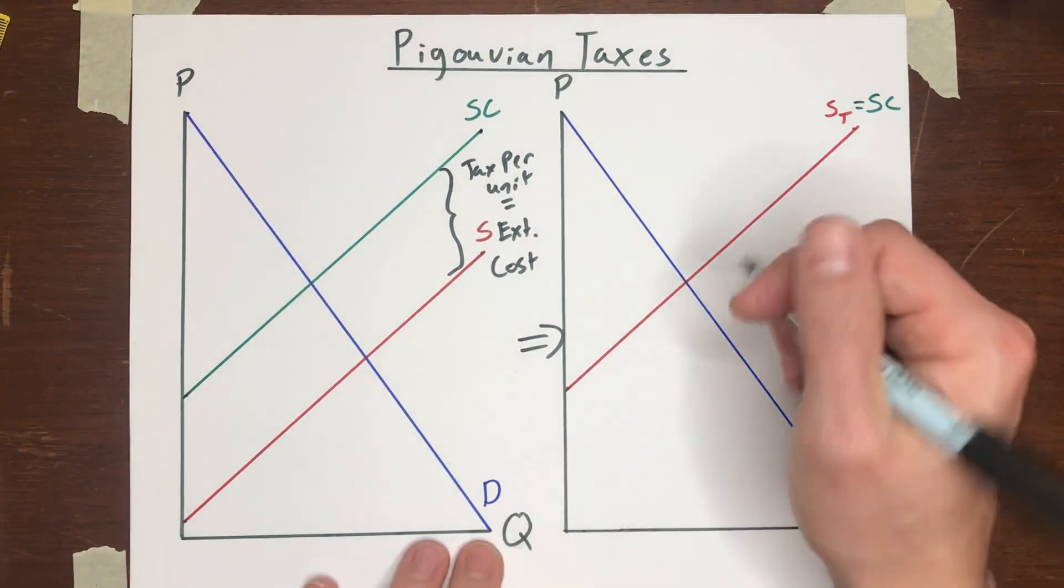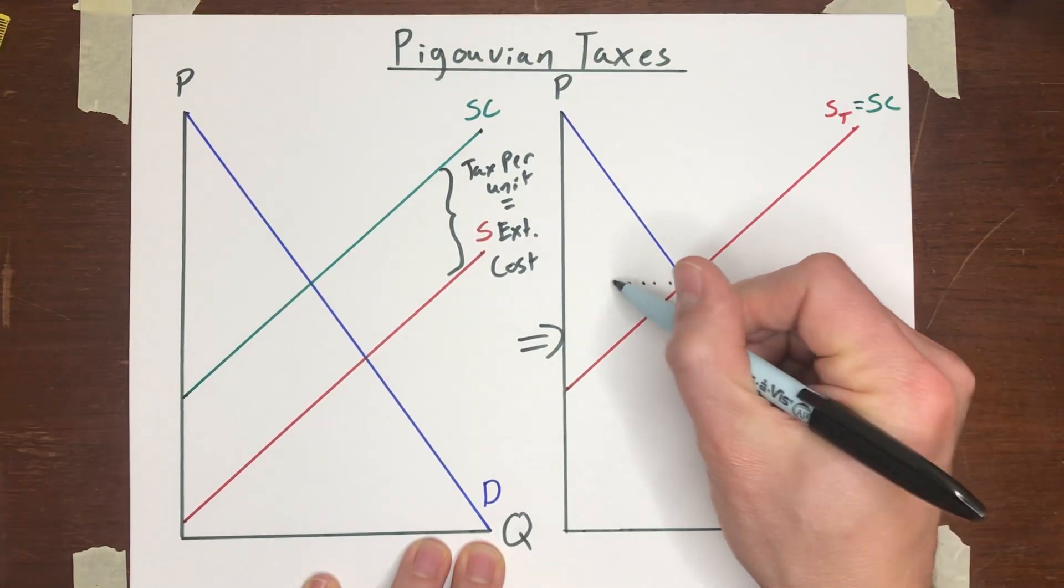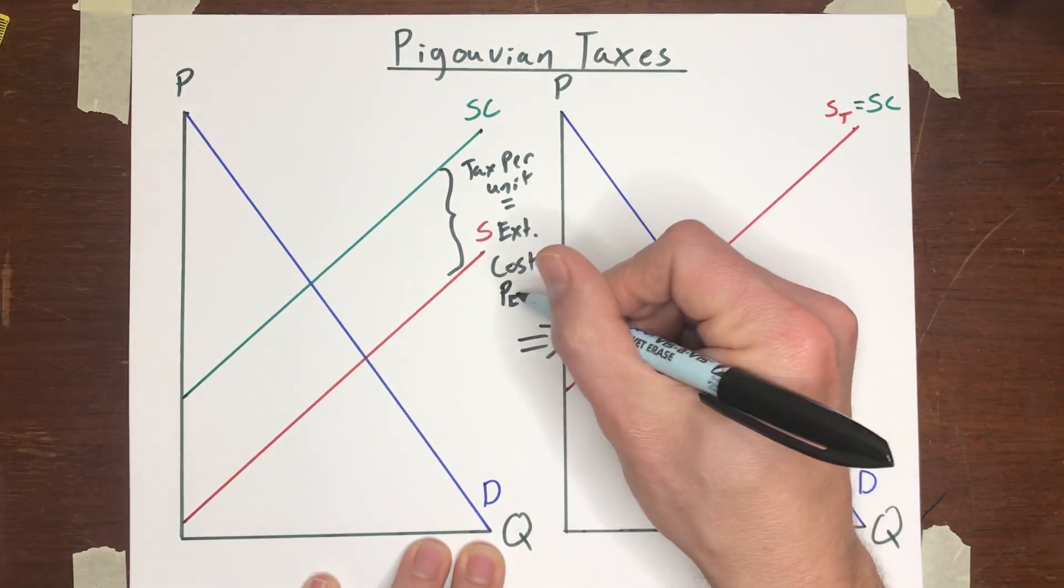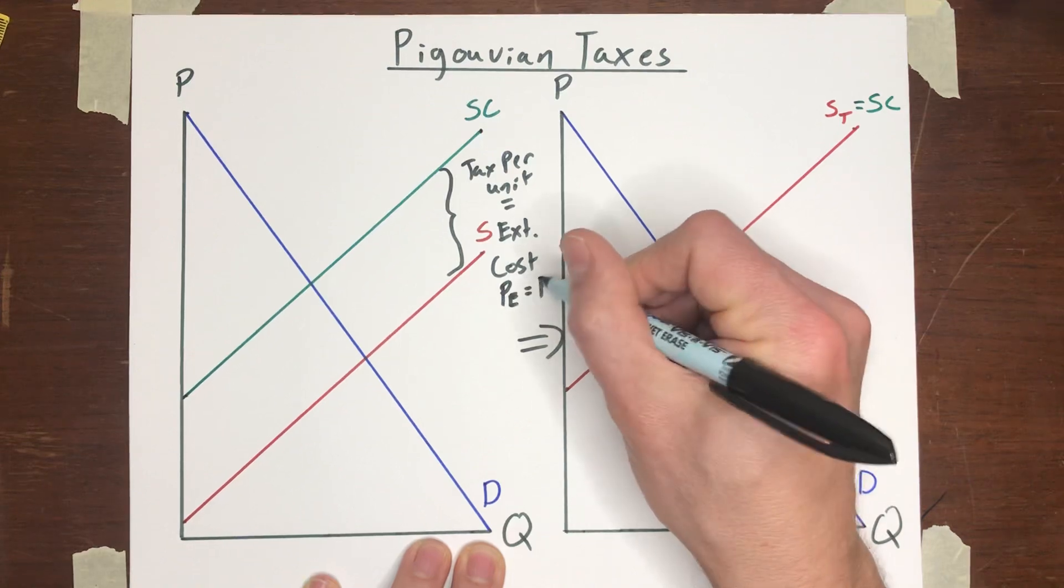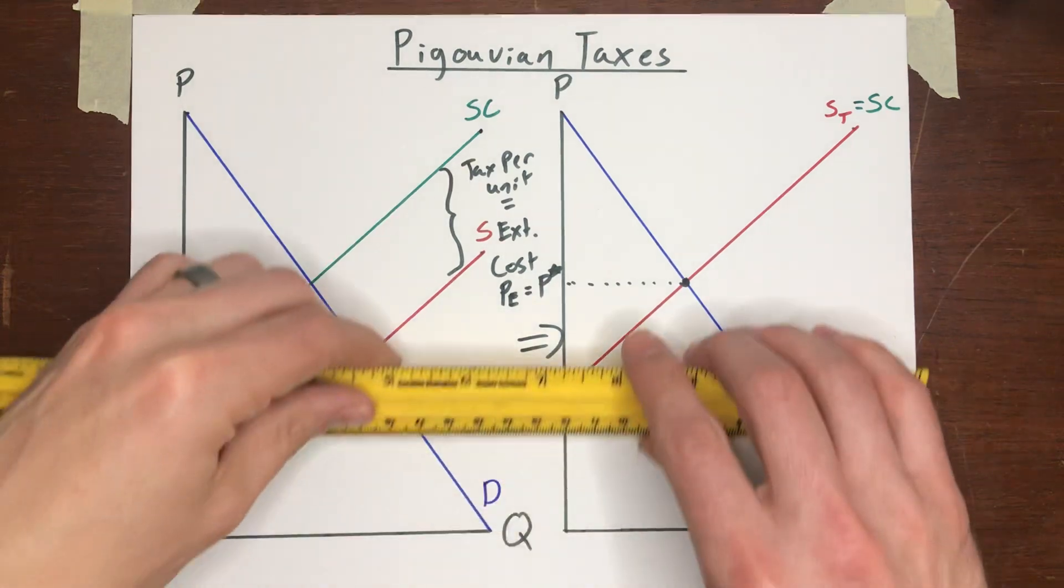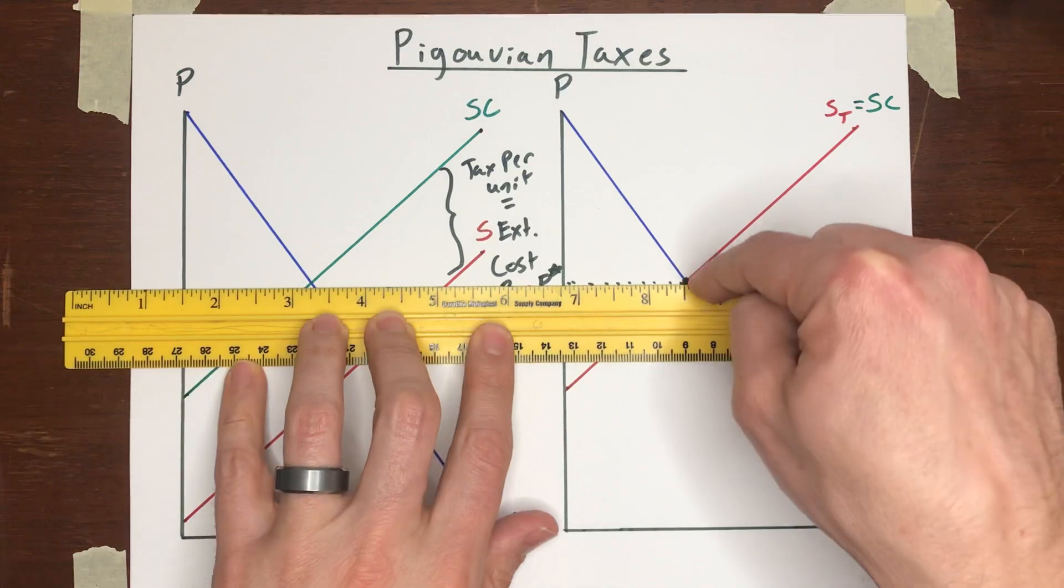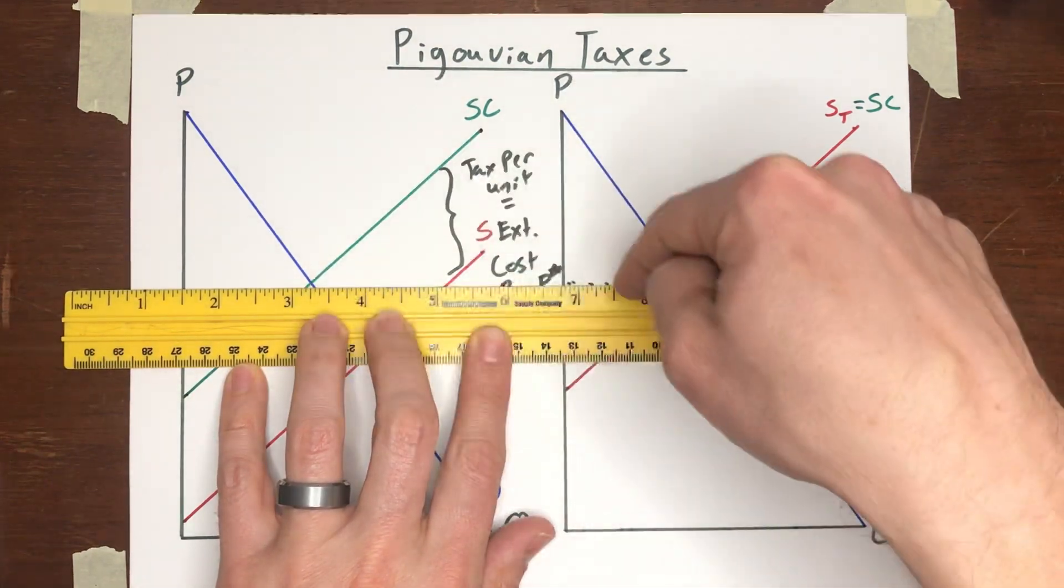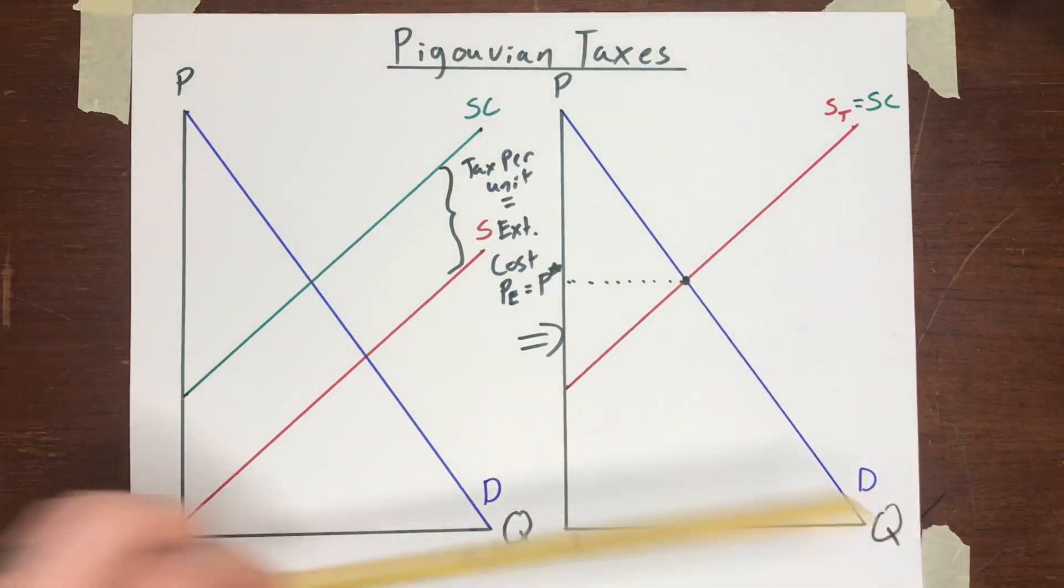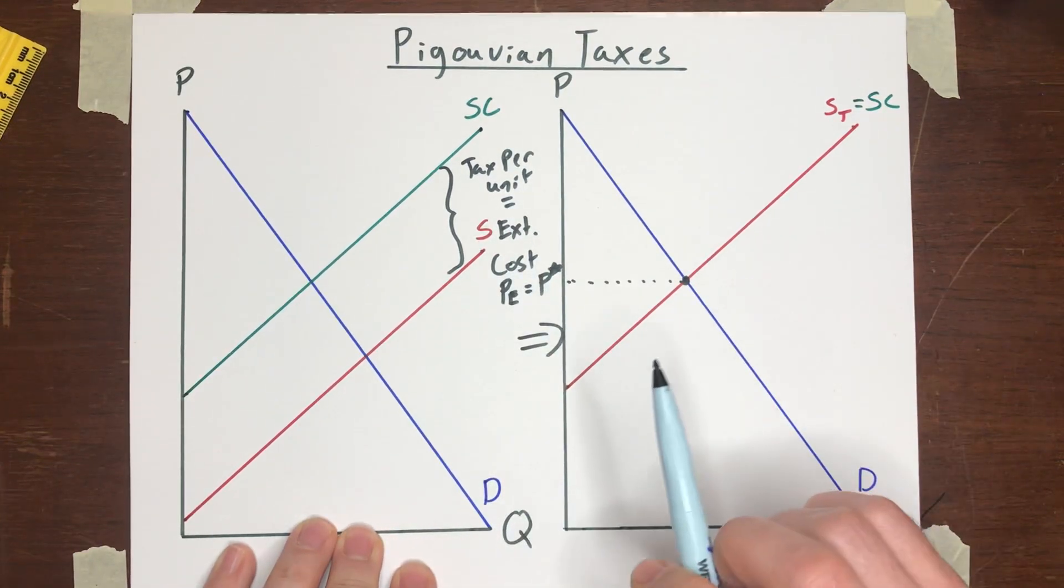And now you're going to be at this point here, this market, its new equilibrium is here, where PE is equal to P star. That might be a little bit difficult to see, but if you bring that price, take the price from this graph all the way over to this one, you'll see that that price is consistent with the social optimum with the negative externality. So in this case, the tax makes the market efficient.